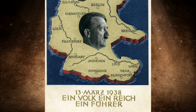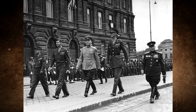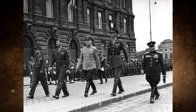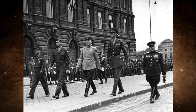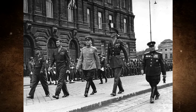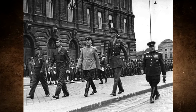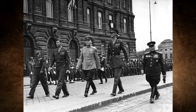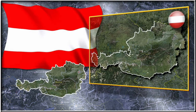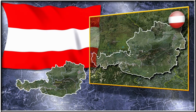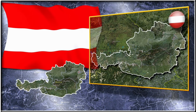The treaty finally came into force in July 1955 and the Allies had to withdraw completely within 90 days. Austria was fully sovereign again from October 26, and this day is still considered a national holiday today.